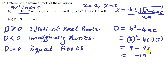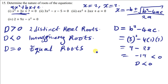Negative 19 is less than zero, so our discriminant is less than zero. This means the given quadratic equation has imaginary roots. When you solve this quadratic equation you'll find a negative value under the square root, meaning it has imaginary roots — sometimes also called complex roots.